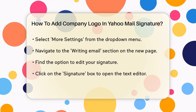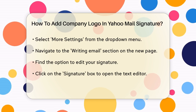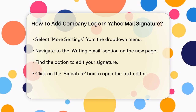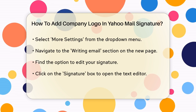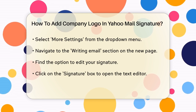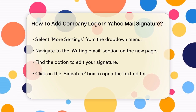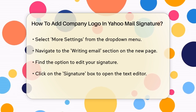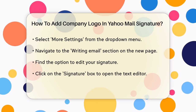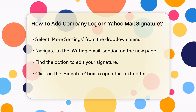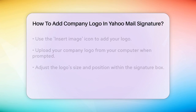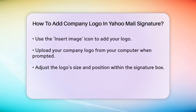Next, log into your Yahoo Mail account. Once you're in, click on the gear icon at the top right corner of the page. This will open the Settings menu. In the Settings menu, select More Settings from the drop-down list. This will take you to a new page with various options.